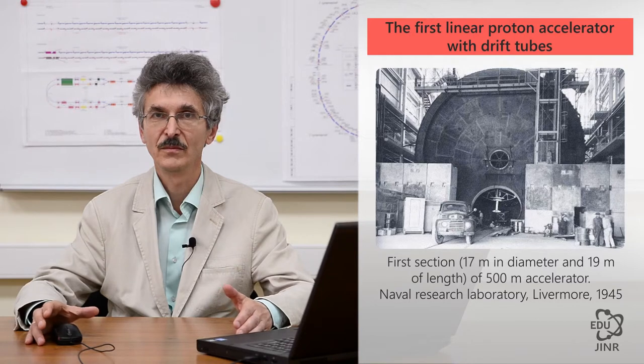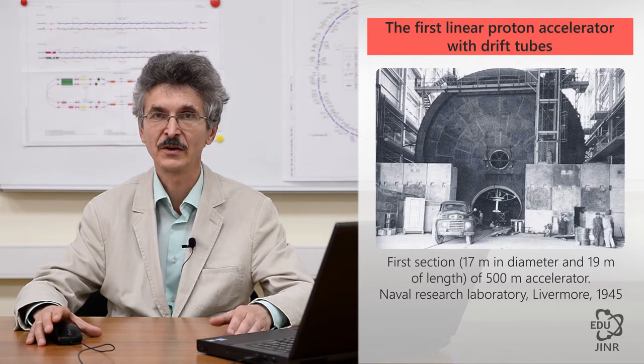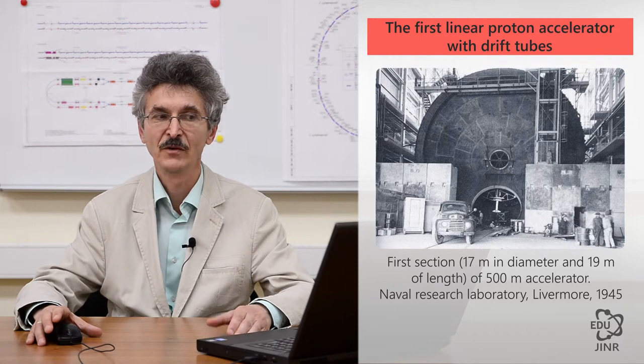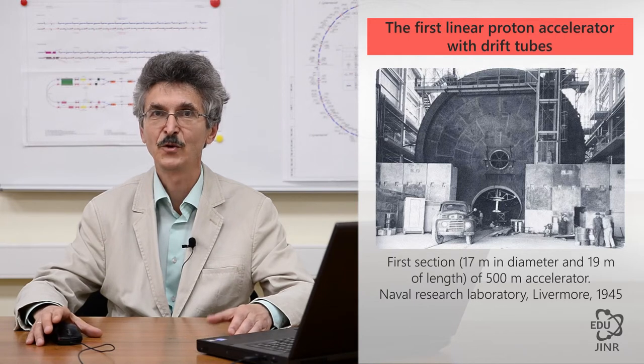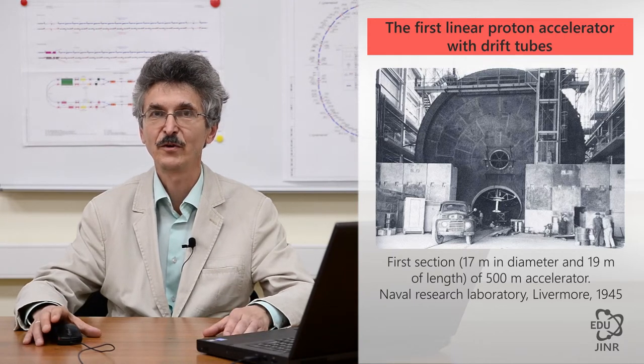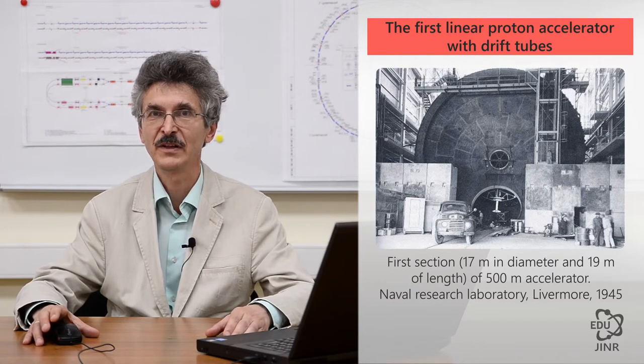The first section of this accelerator was completed. It was an iron tank 17 meters in diameter and 18 meters in length. A truck drove inside the tank with a 2-ton drift tube. These drift tubes were placed on special devices and attached to the top of a resonator.